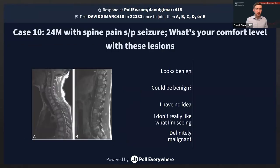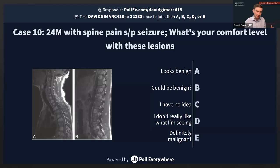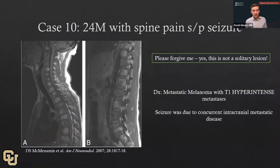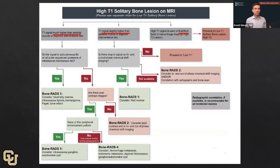Case ten: a 24-year-old male with spine pain who had a seizure. I'll grant you that today's talk is on solitary lesions and this is not a solitary lesion, but I needed a good example. We seem unanimous we don't like what we're seeing. This is an example of metastatic melanoma with T1 hyperintense mets. The multifocality and the soft tissue component make this certainly an aggressive appearance. This is what the high T1 lesion algorithm looks like: it initially breaks into whether T1 signal is much higher, slightly higher, or has more of a fluid-fluid component. Really only one channel leads to Bone RADS 4 — through having T1 signal much higher than skeletal muscle, not looking like subcutaneous fat, and enhancing in a nodular or mass-like way. That's when we get to hemorrhagic mets, melanoma mets, and atypical things needing to be addressed.